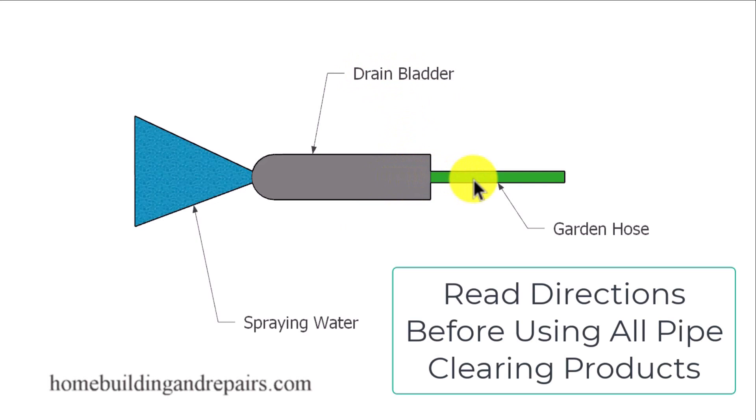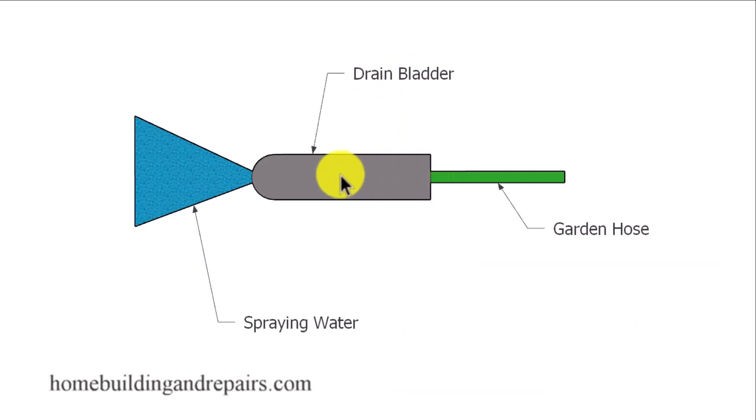The tool connects to a garden hose and then you slide it into a plumbing pipe and turn the garden hose on. This causes the drain bladder to expand enough to seal the plumbing drain pipe and force water into it to dislodge loose objects that might be clogging the drain pipe and allow the water from the hose to clean out some of these particles also.